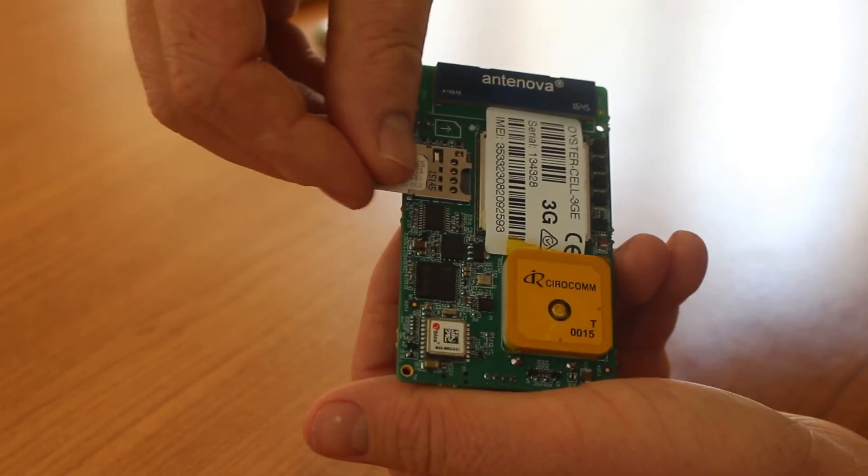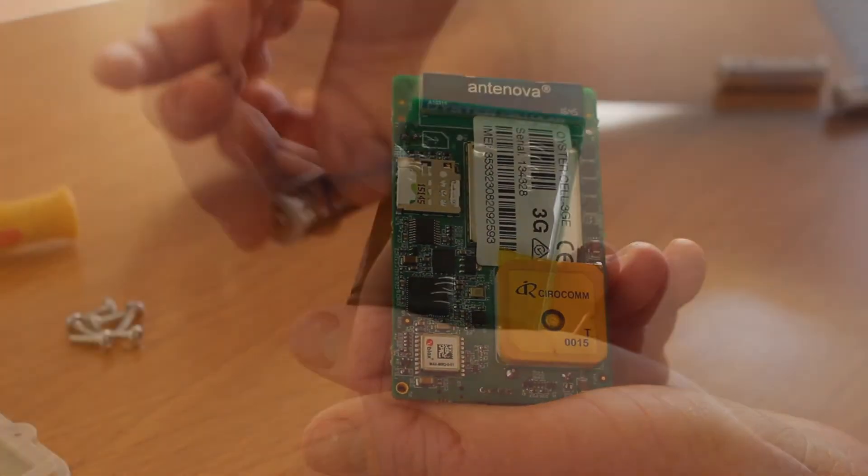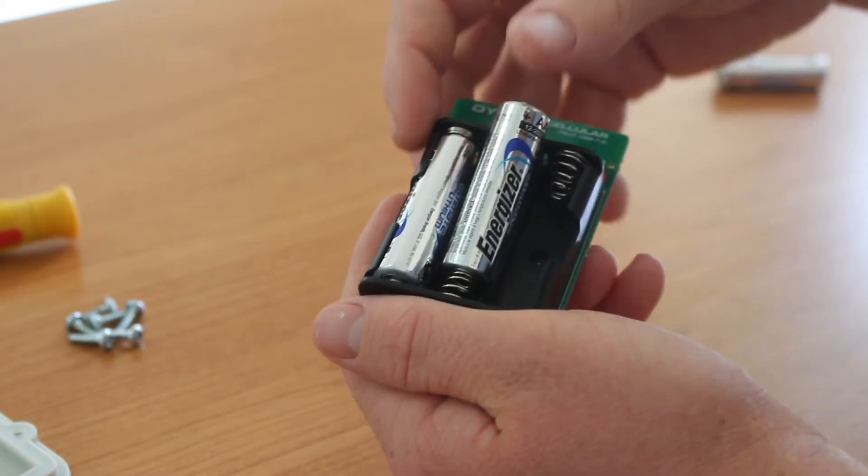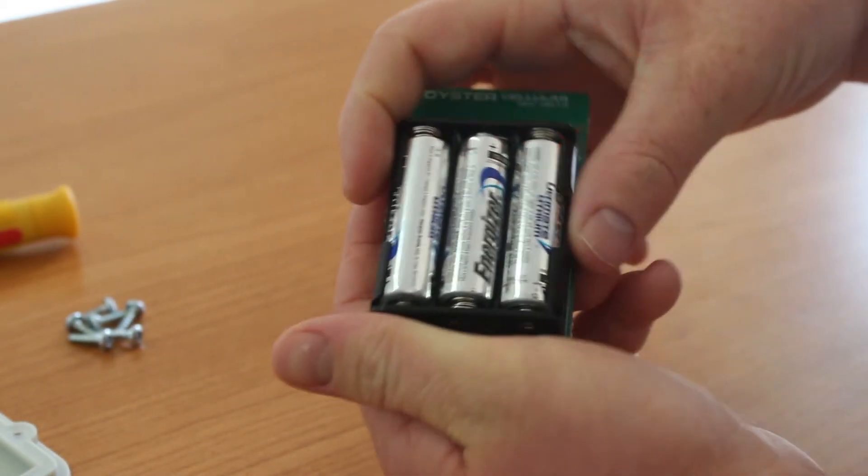Turn the device over and put in the SIM card as follows. Then insert the batteries. When the batteries are inserted, a light will flash, meaning the device has power.